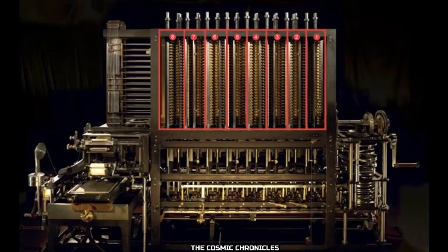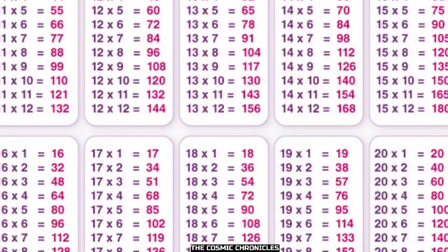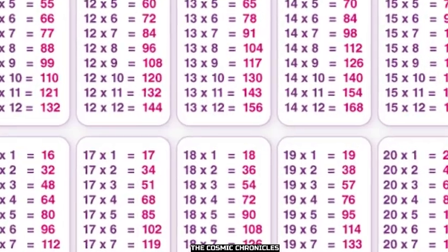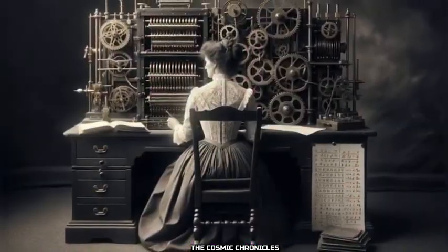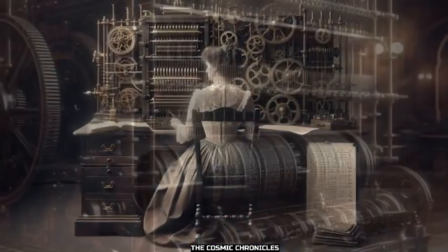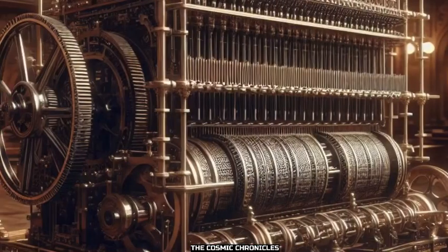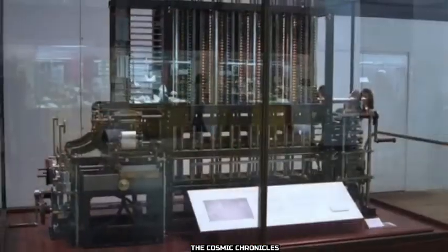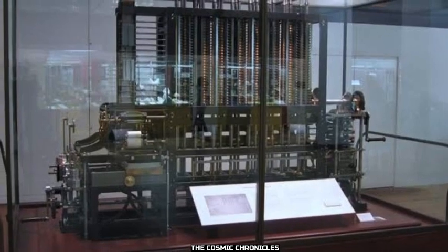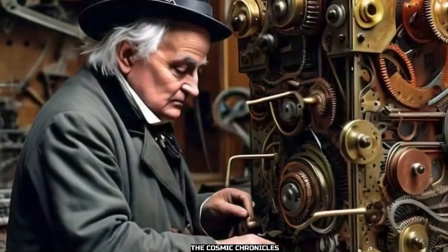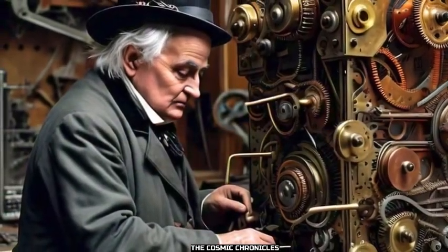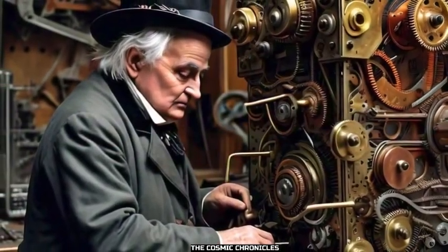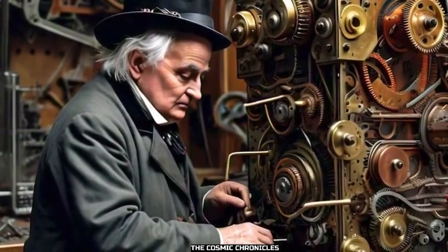In essence, the Difference Engines were focused on automating the production of mathematical tables, while the Analytical Engine laid the groundwork for the concept of a programmable computer. Difference Engine No. 2 was a testament to Babbage's relentless pursuit of precision and efficiency in mechanical computation.